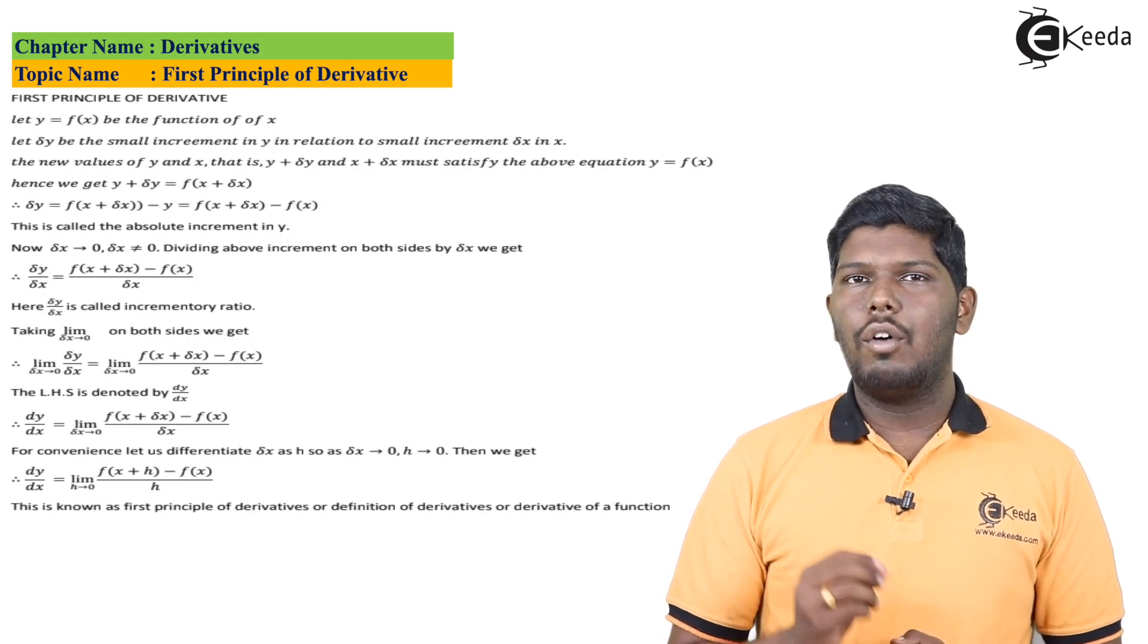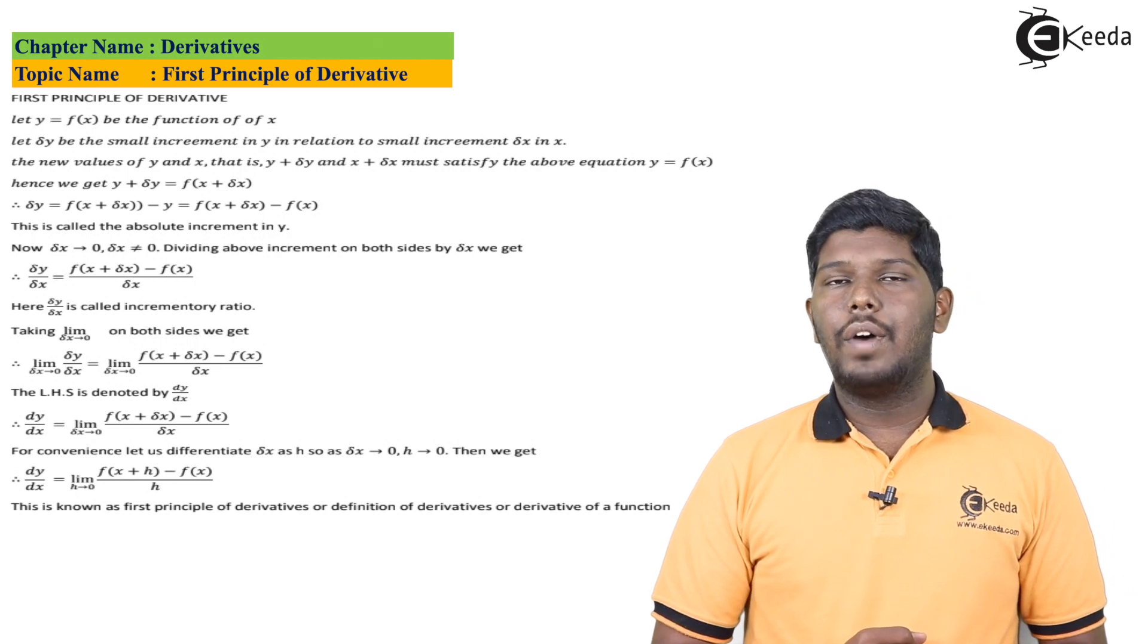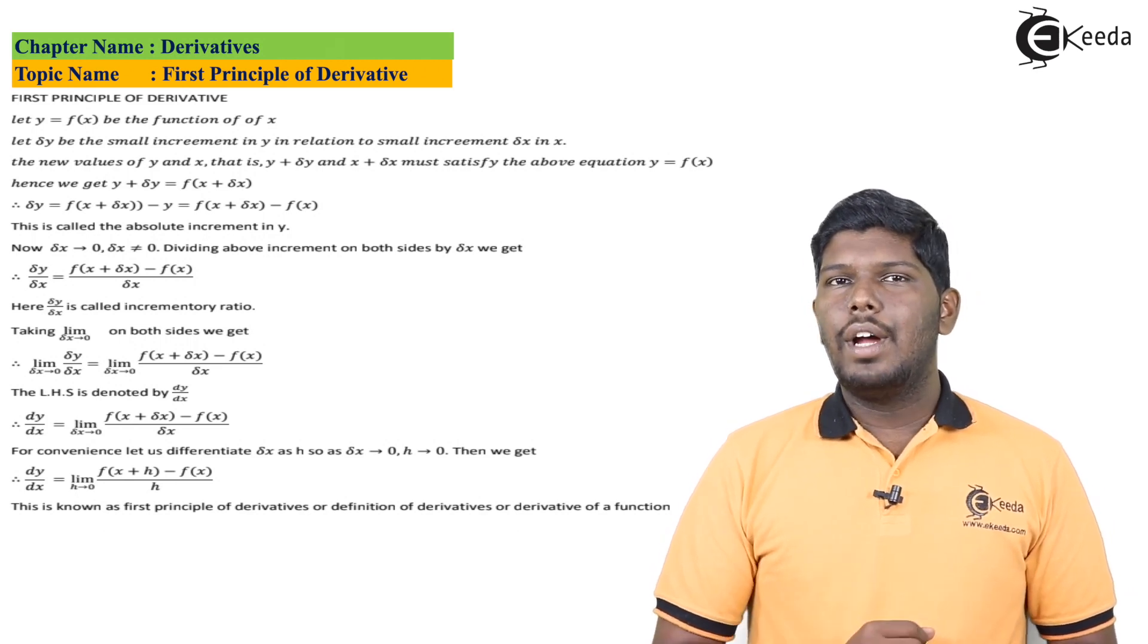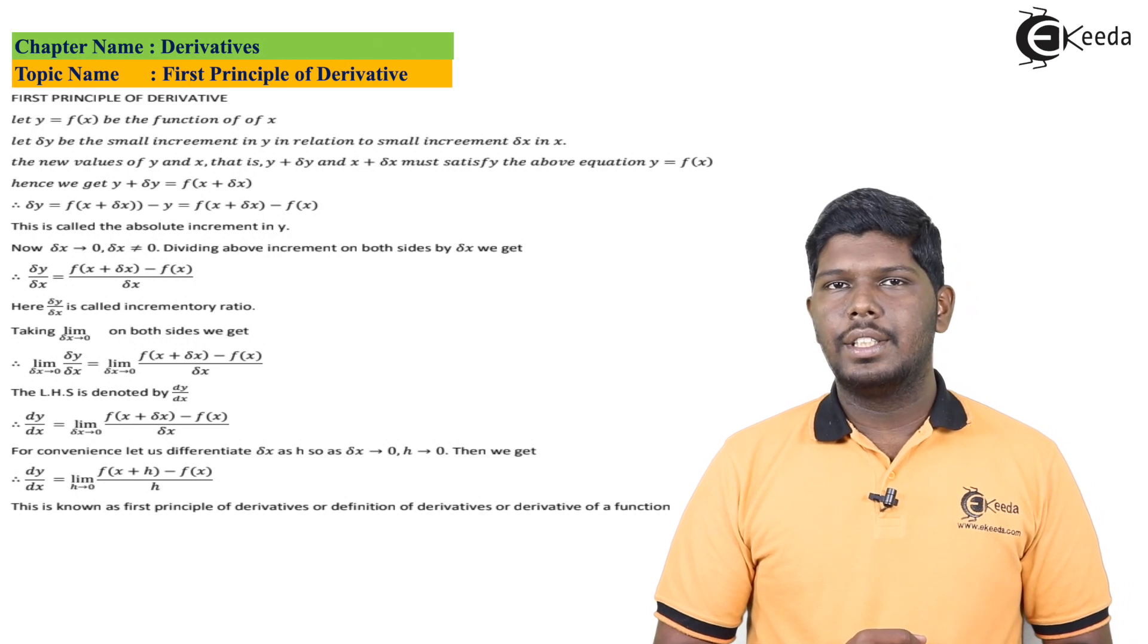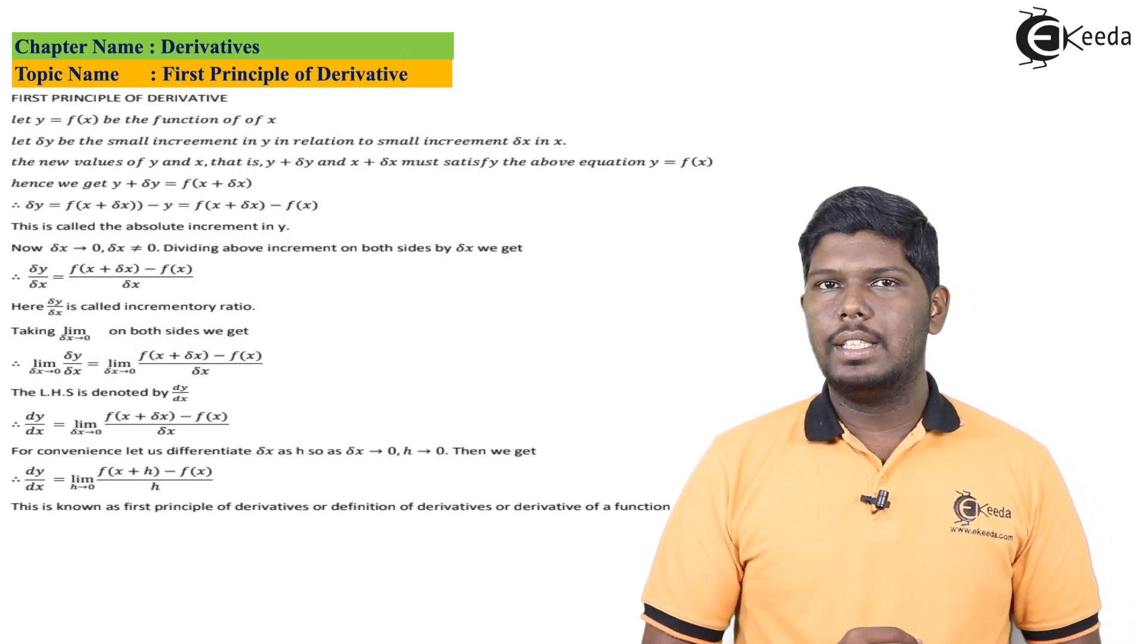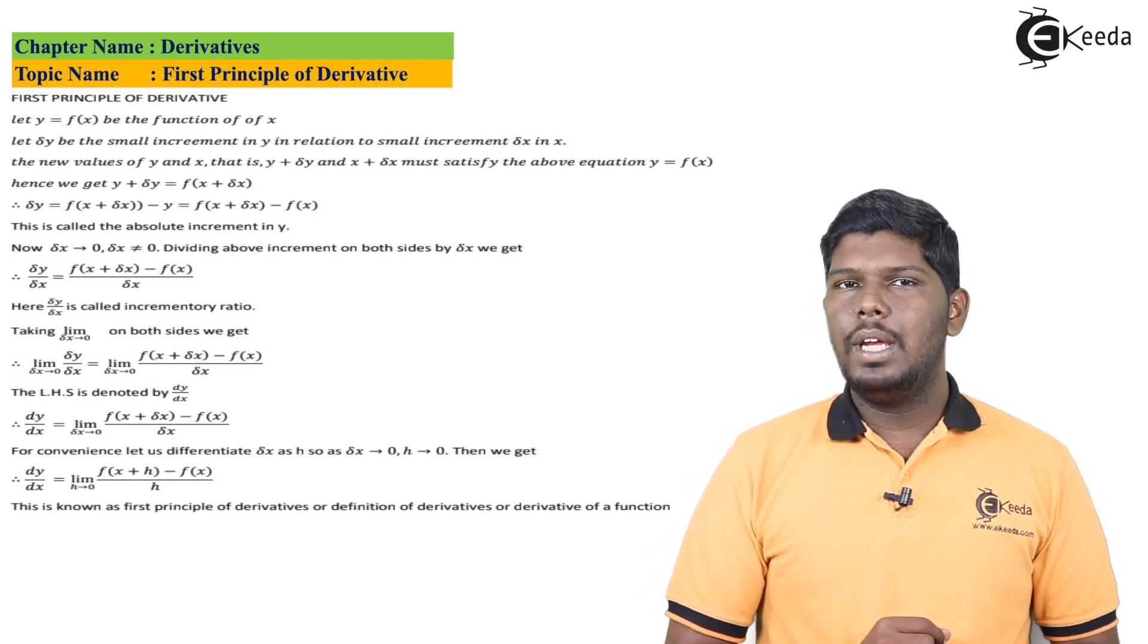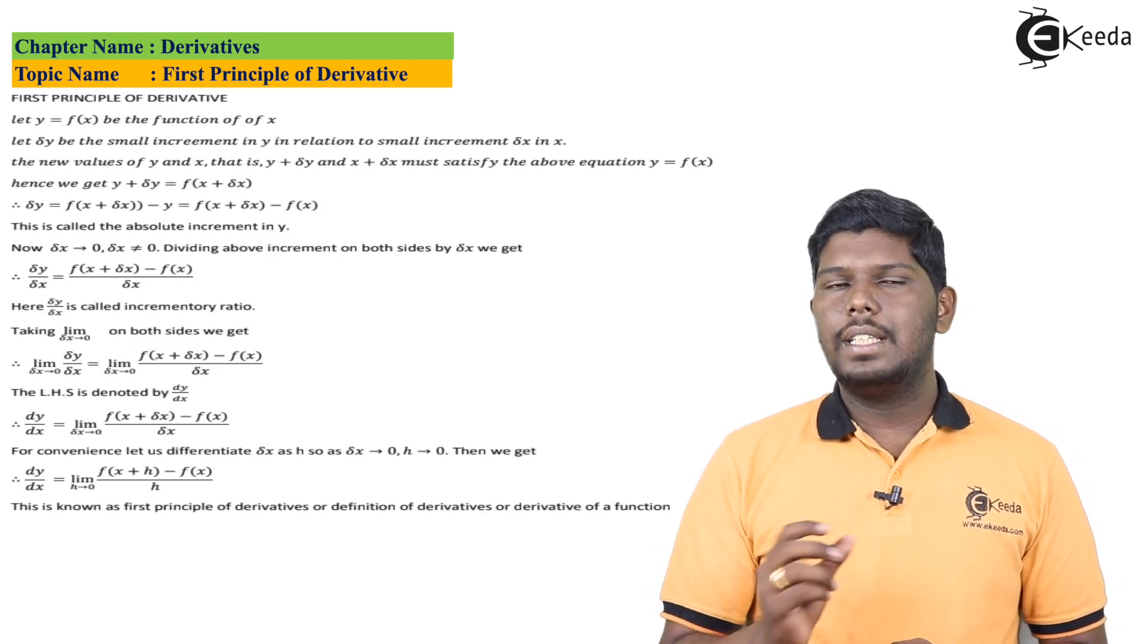Now using this equation let us try to find the value of del y. To find the value of del y you can transfer that y on the right hand side, so the value of del y will be f of x plus del x minus y. Now what is the value of y? It is f of x. So del y will be equal to f of x plus del x minus f of x, and this value is called the absolute increment of y.